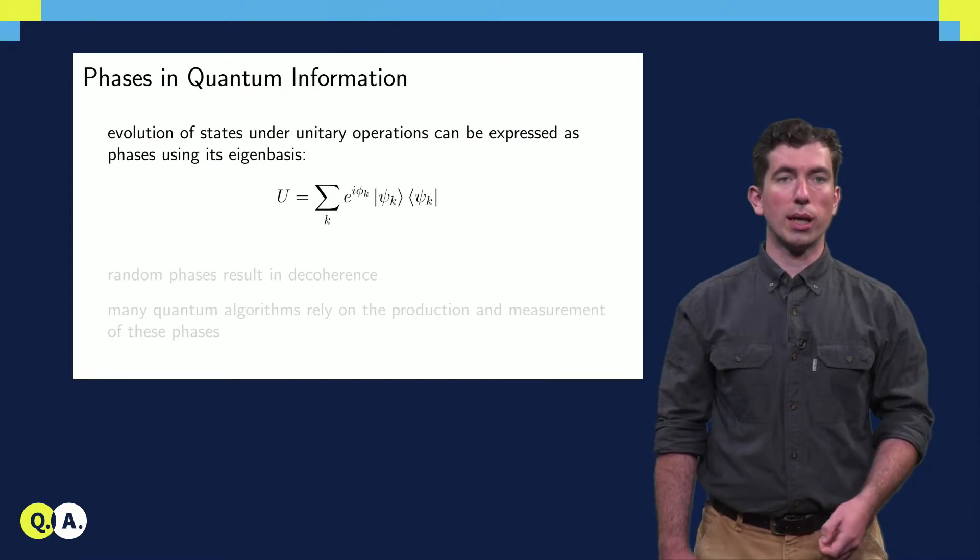Every unitary operator can be written out in its eigenbasis, and its action is reduced to a set of these phases. If we put one of the eigenstates in, the output is the same state multiplied by that phase.